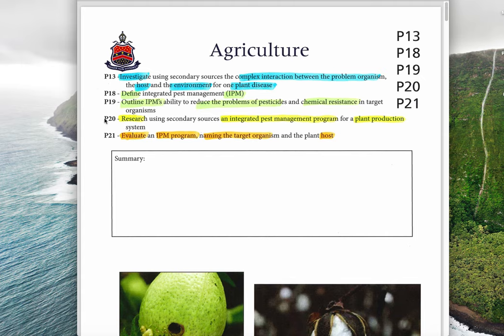P13 is investigating the complex interaction between the problem organism, host, environment and plant disease, also known as the pest disease triangle, which you have seen before in animal production.